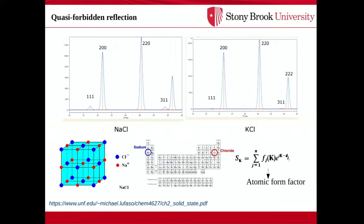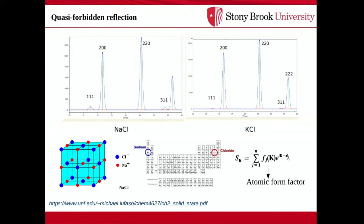Another example is the quasi-forbidden reflection in sodium chloride. NaCl has one FCC of blue dots and another shifted FCC of red dots (Na and Cl). They have similar but not identical electronic structure, so they partly cancel but not completely, giving a small peak. In potassium chloride, the peak is even smaller because potassium plus and chlorine minus have very similar electronic structure — they have nearly the same number of electrons. Sodium plus and chlorine minus have similar but not as similar valence electrons, so the NaCl peak is slightly larger.